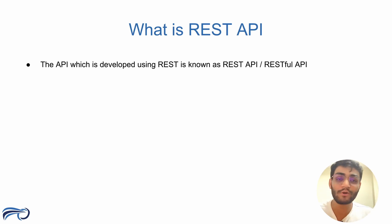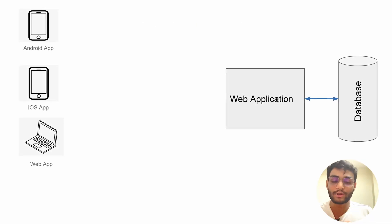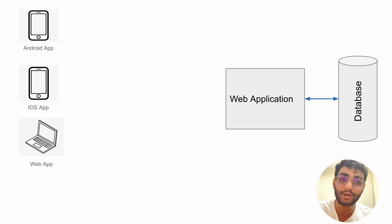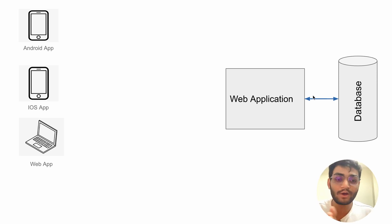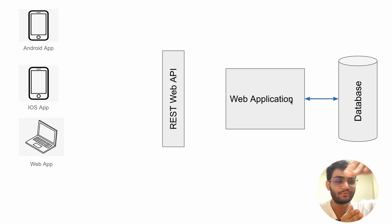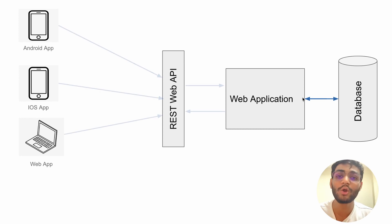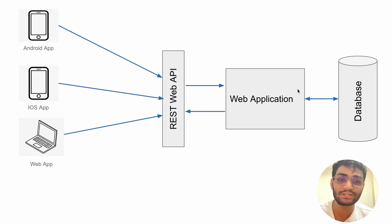Now let's understand how REST API works. First, let's see how traditional things work. In the current world, say we have developed an application in Django using HTML, CSS, and JavaScript, or some application in Laravel. Now, if you want to scale that application and build an Android or iOS application for it, it would be nearly impossible. This is where the API and REST API come into the picture. We build a REST API which each of our clients will use — an Android application, iOS application, or web application can all use the same set of APIs to communicate with the web application and the database.